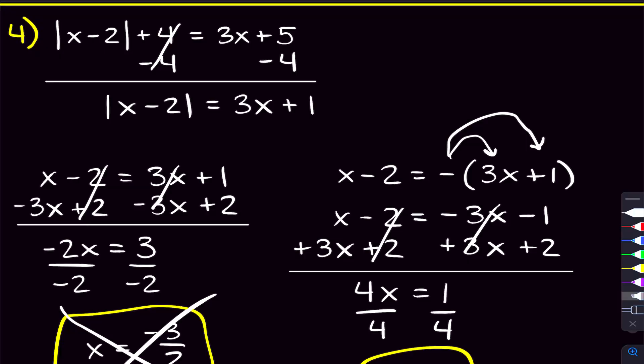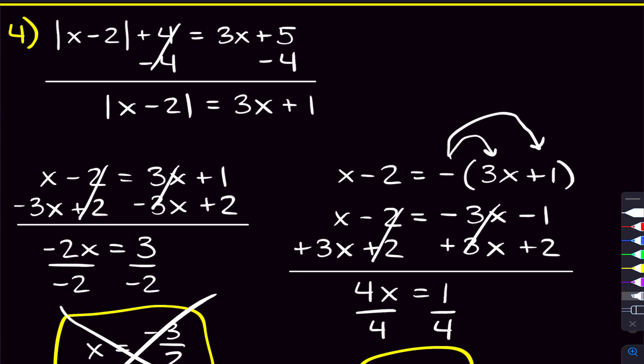You might wonder if you need to plug solutions back in every single time. You can if you want — there's no harm. But the only time you'll get false solutions is when there are x's outside the absolute value. If you check problems 1 and 2, both solutions work because there were no x's outside the absolute value. If you can remember that, great; if not, just check anyway.